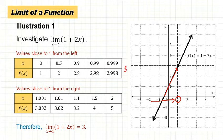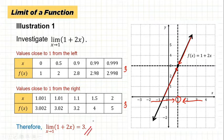As x approaches 1 from the right, tracing the graph it also approaches the point where y = 3. So the right-hand limit is also 3. Since they have the same value, the general limit is equal to 3. What we look for on the graph is the value that the function is heading toward — we trace the graph and if the left side and right side meet at the same point, that's the limit. Otherwise the limit does not exist.